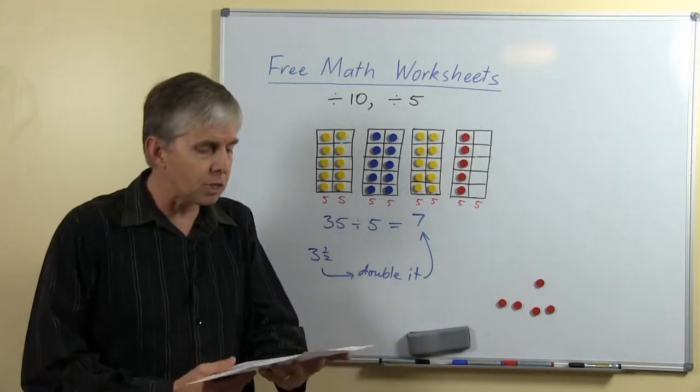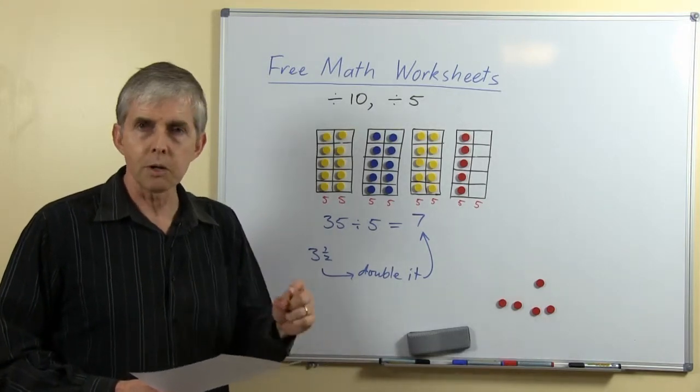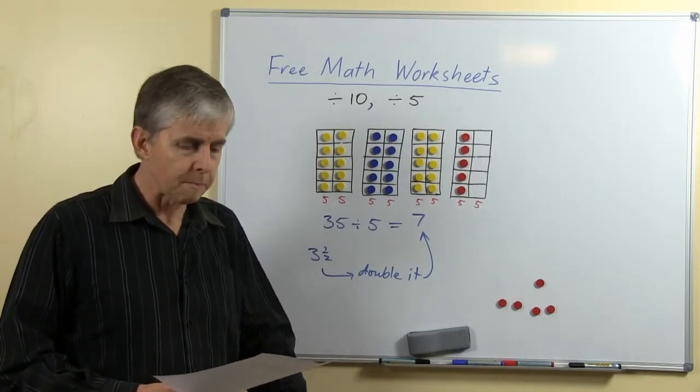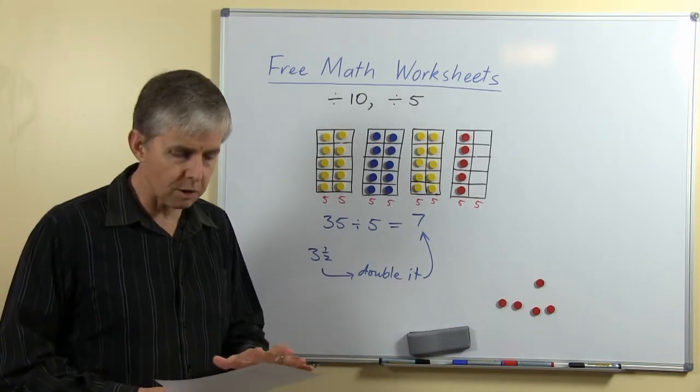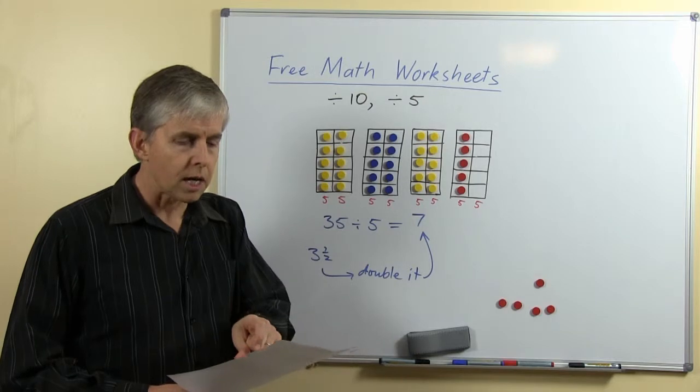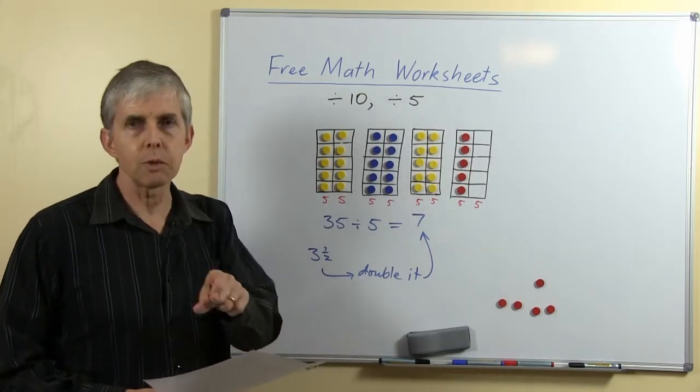On the worksheet you'll see a range of questions. There are some related, multiplying by 5 number facts to start with, then we have a set of dividing by 10, a large set of dividing by 5, and in the top right hand corner multiplying by 5th and multiplying by 10th.